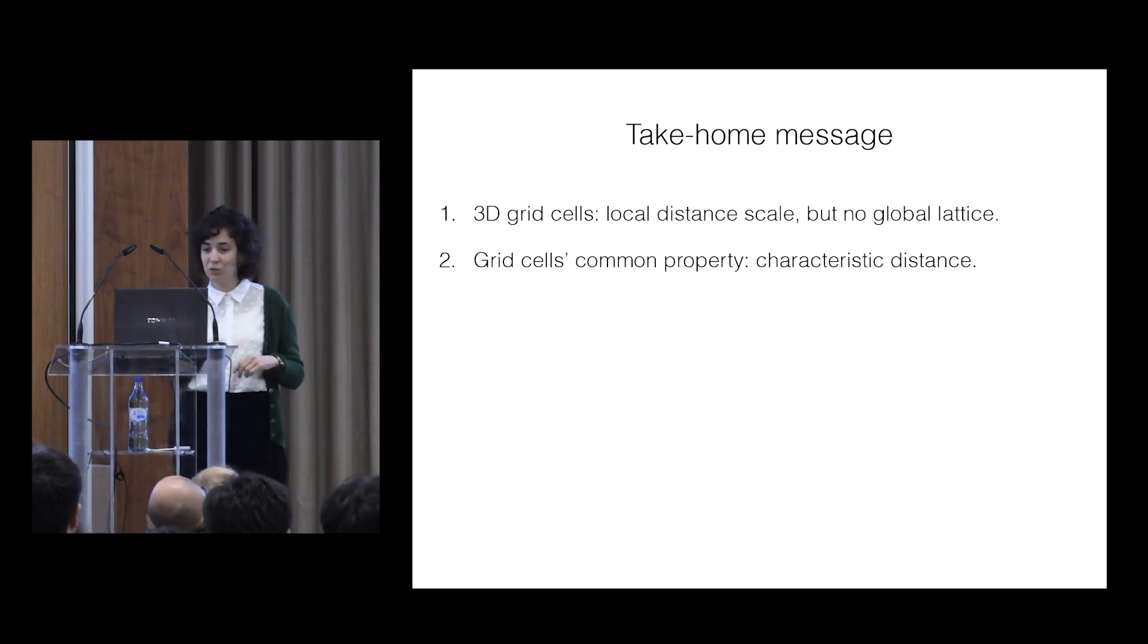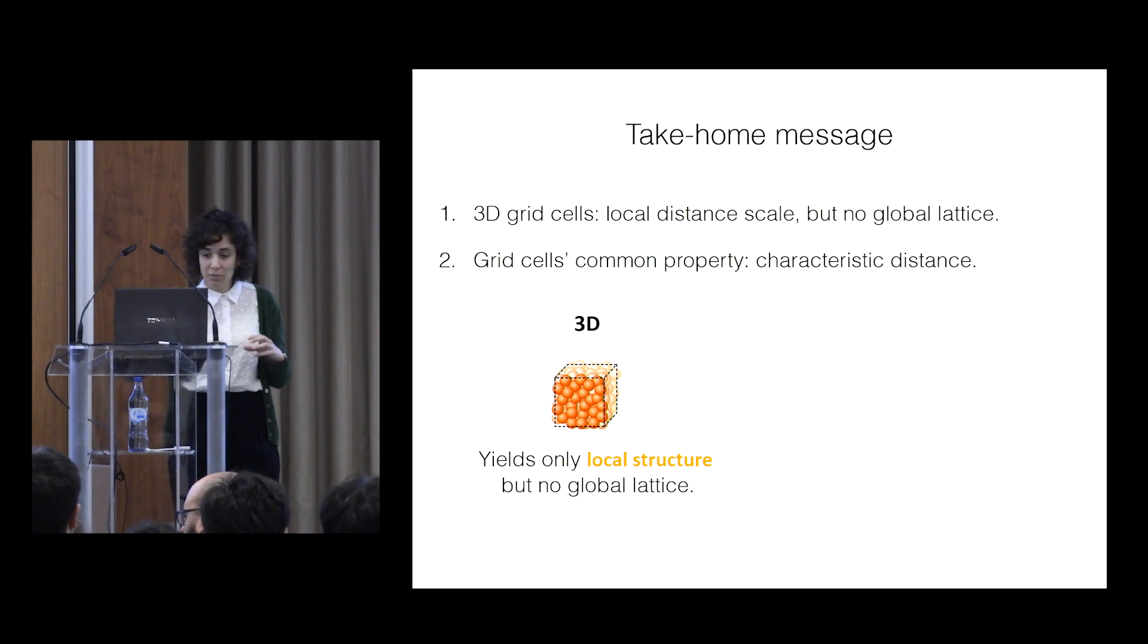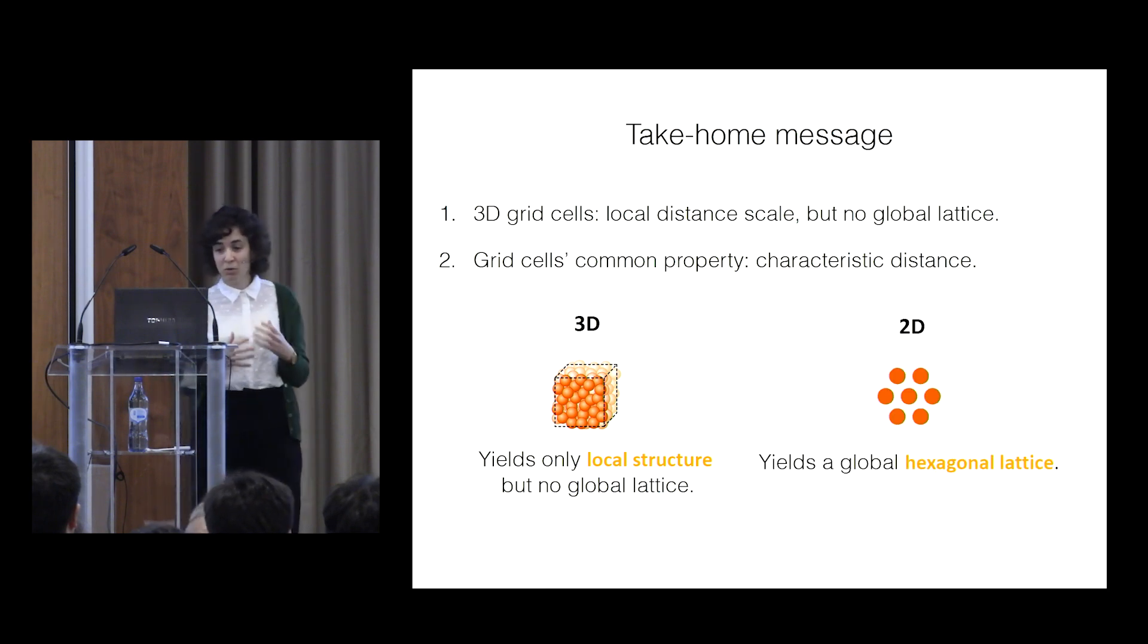So the take-home message should be we have 3D grid cells with local distance scale but no global lattice, and it seems like the grid cell's common property, which is maintained in both 2D and 3D, is the characteristic distance between neighboring fields. We have a model that in 3D, using pairwise interaction, yields only local structure but no global lattice, and in 2D yields a global hexagonal lattice many of the times.